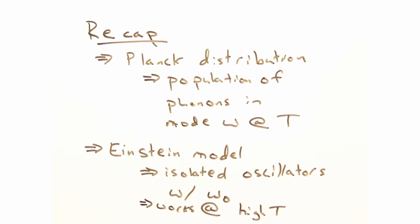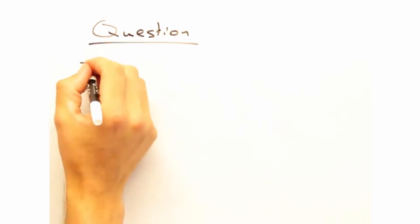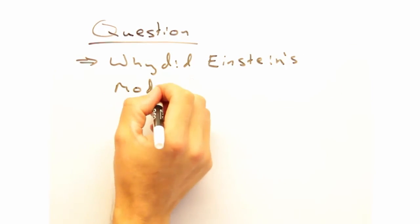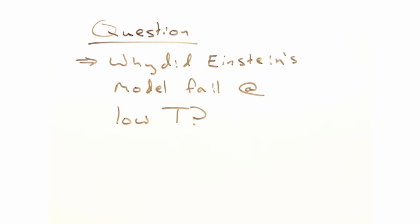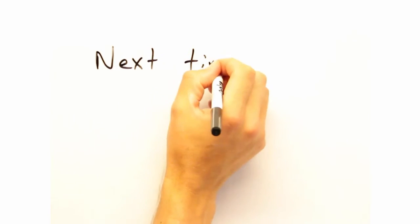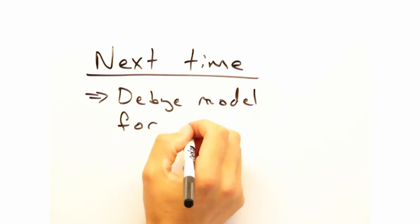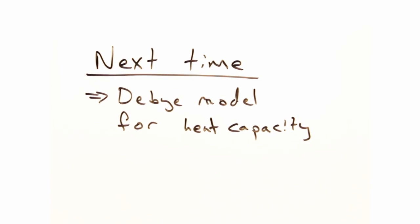Although Einstein's model didn't get the low temperature behavior quite right, you at home should consider why he did get it right for the high temperature limit. So that's a wrap for today. Next time, we'll introduce the Debye model for phonon heat capacity. Thanks for watching Solid State Physics in a Nutshell. See you then.